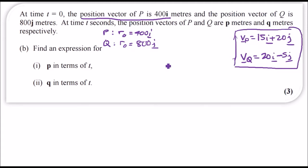We use the general equation which is rt equals r0 plus vt, where rt is the position vector at time t, r0 is the initial position vector, v is the velocity and t is the time. All we do now is just plug in values. For P we're going to have p equals r0 plus vt.